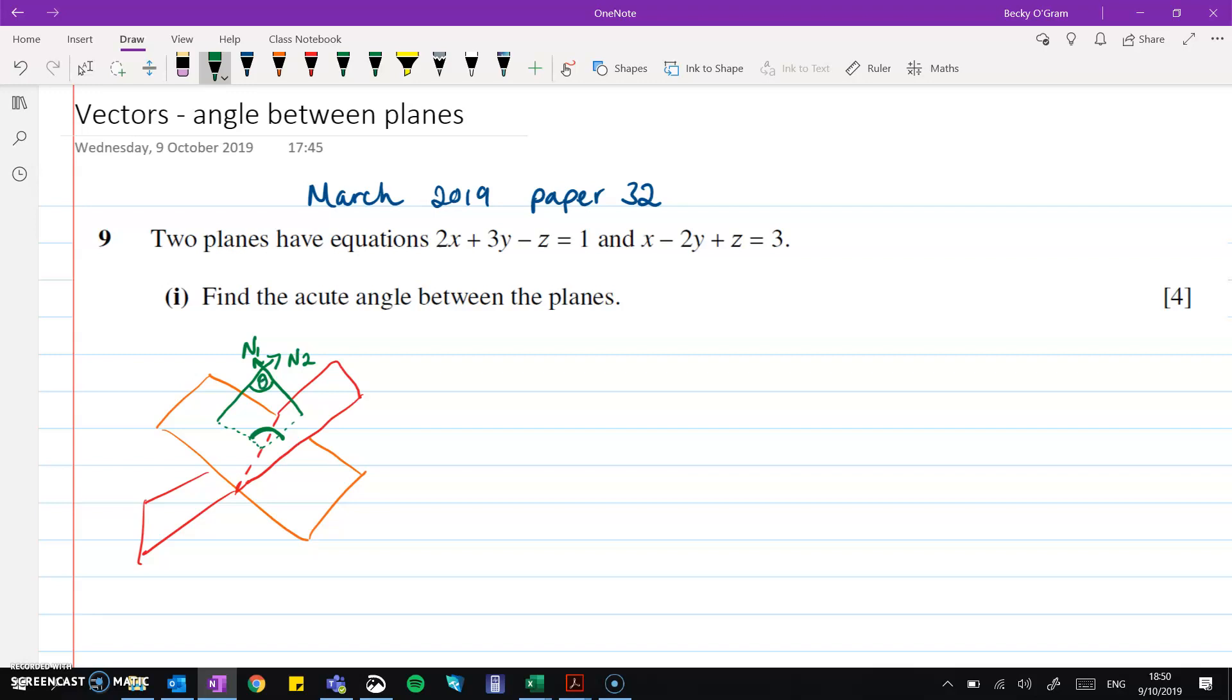So if we call that one theta, we can work out theta using scalar products on the two normal vectors. And those two angles opposite each other have to add to 180. We've got a 90 degree there, a 90 degree there, and then it makes the quadrilateral. There is a video on how to do this. If you need to go back and find the theory that backs this up, you can find that on my channel.